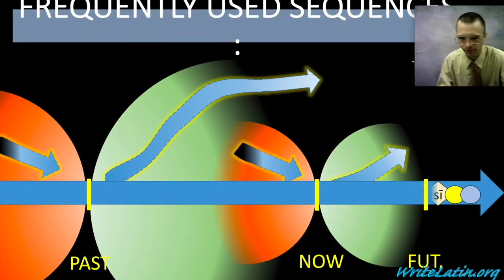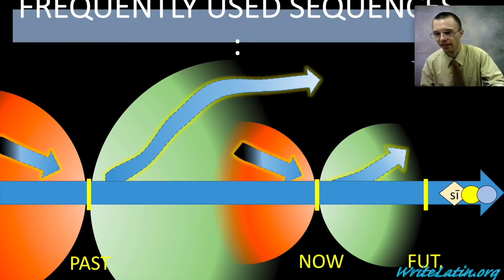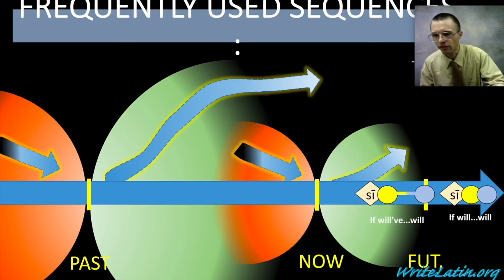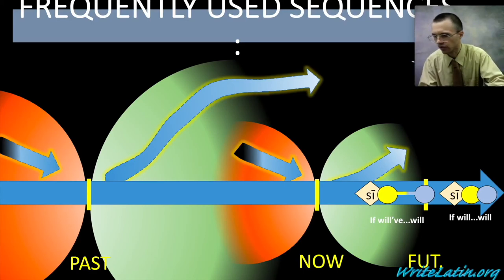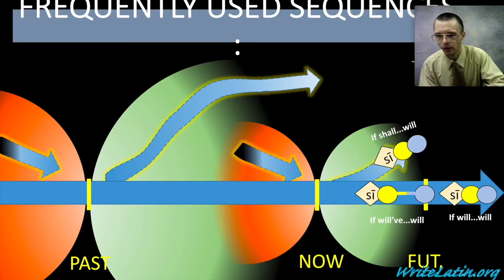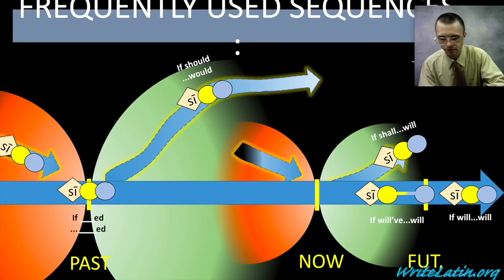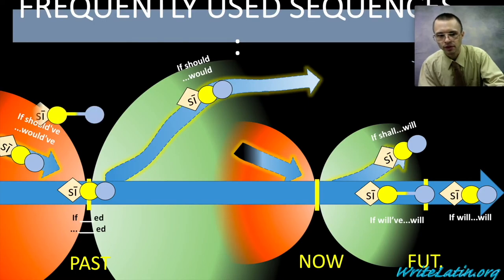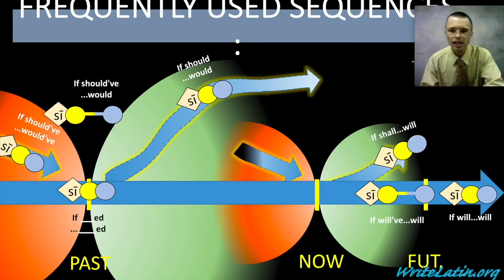Frequently used sequences of if-thens you'll often encounter: if will then will (indicatives on the timeline); if will have then will (future perfect, a subset of present backward-looking subjunctive); if shall/will then will (subjunctives, very common); if should then would (very common); if blanked then blanked (two indicatives, common); if should have then would have (very common); and if should have then would (common). Conditional clauses can really be pretty much anywhere — the key is not to remember where they occur on the timeline, but just to read them in order as what they literally say.